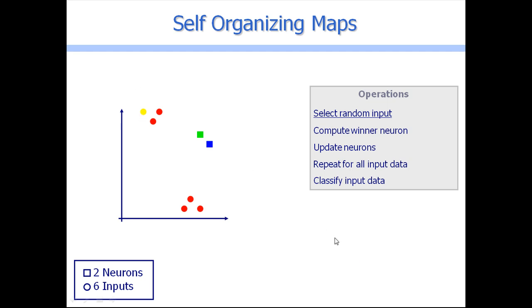After this we will compute what is called the winner neuron. The winner neuron is the neuron that is, considering this feature space, the closest neuron to this input. After this we are gonna update this neuron, which means this neuron will be more similar to the input.